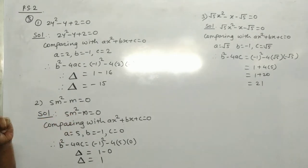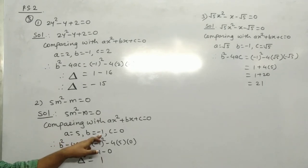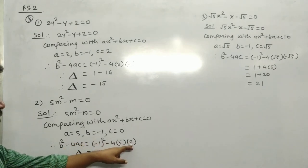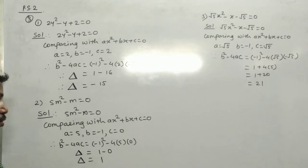Second equation: 5m² - m = 0. Comparing with ax² + bx + c = 0, a = 5, b = -1, c = 0. Discriminant = b² - 4ac = (-1)² - 4×5×0 = 1 - 0 = 1.